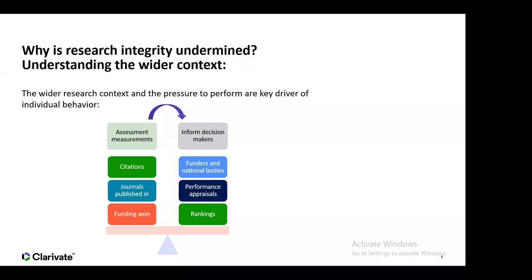These measurements are used by decision makers and are important for all players within the research ecosystem — for performance appraisals at university level and for rankings that students use when choosing where to apply. Because bibliometric and other indicators are used for rankings, there is an incentive baked into the research ecosystem that can result in taking advantage of loopholes within the system and conducting misconduct within research.